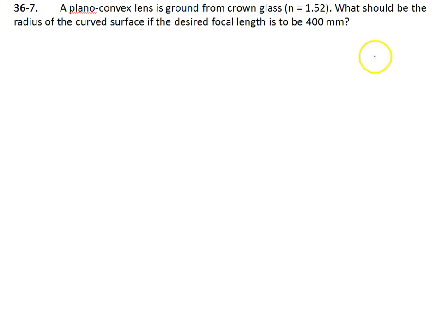Well first, let's just check that we know what we're talking about. A plano-convex lens is one which has one flat surface and one convex surface. And we're asked to calculate the radius of the convex surface.